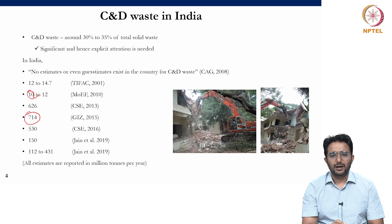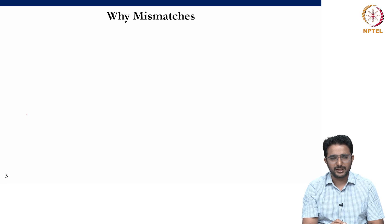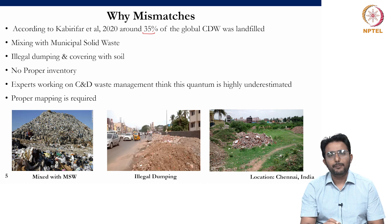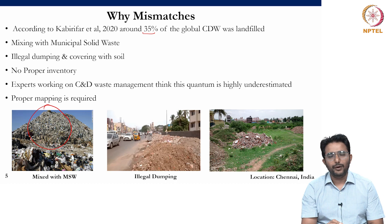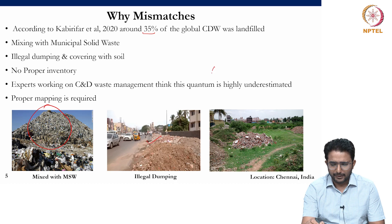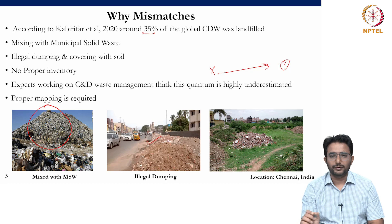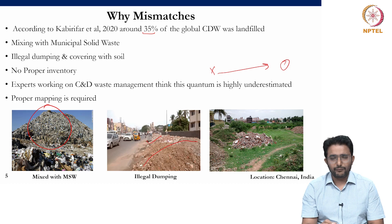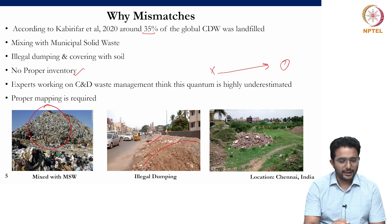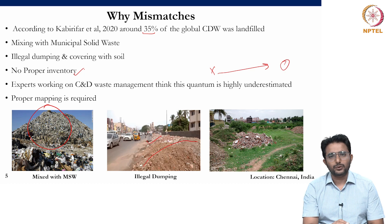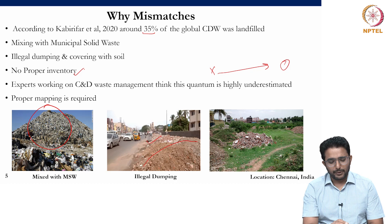For a material like C&D waste there will always be differences because of multiple reasons. Of all the total C&D waste, around 35 percent is landfilled. Most of the time, C&D waste is mixed with municipal solid waste, making it very difficult to track. In most cases, C&D waste is also illegally dumped — because the designated dumping site may be very far from the source, or landfill charges are very high — and then covered with soil so no one can see it. There is no proper inventory for C&D waste. Therefore, experts working on C&D waste believe the reported quantity is highly underestimated, and proper mapping of C&D waste is required.